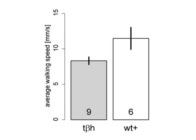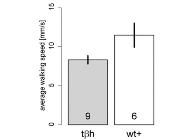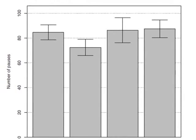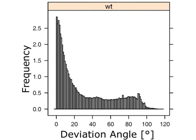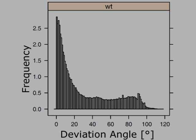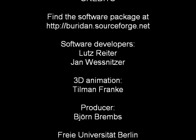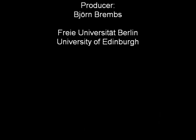Or we can compare the walking speed between wild type and mutant or transgenic flies, how many stops and starts they make, and many other parameters.